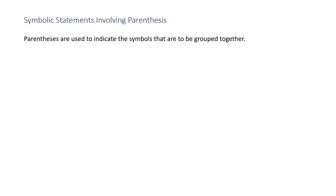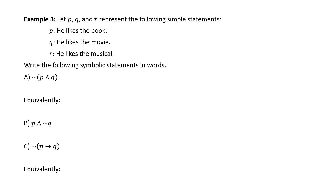Symbolic statements involving parentheses. Parentheses are used to indicate the symbols that are to be grouped together. Example: let P, Q, and R represent the following simple statements. P: he likes the book. Q: he likes the movie. R: he likes the musical. Write the following symbolic statements in words. Part A: ∼(P ∧ Q) — 'It is false that he liked the book and the movie.'